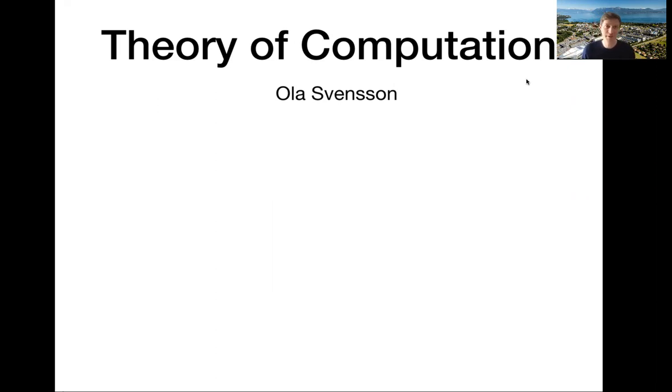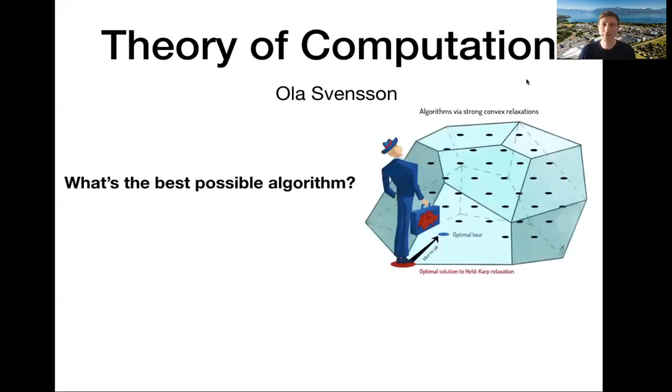As I said, I'm in theoretical computer science, so I'm mainly interested in questions like, what is the best possible algorithm? Here you can see an illustration of my work. I worked a lot on the traveling salesman problem, and I want to understand how strong are the best convex relaxations we know for this problem.